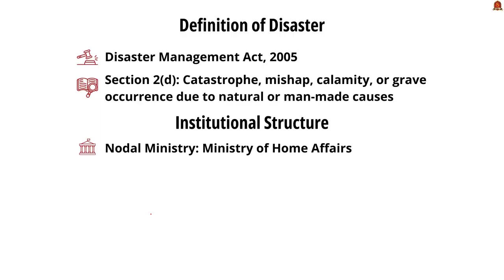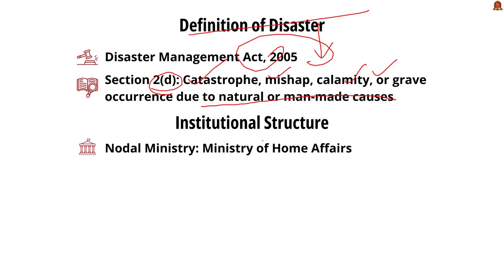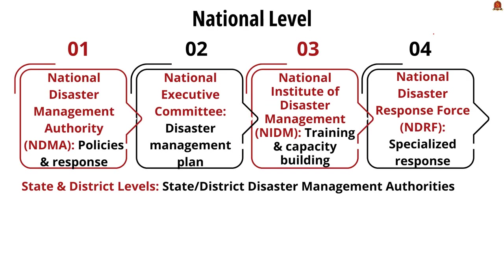The definition of disaster is defined in the Disaster Management Act 2005. According to Section 2(d) of the Act, disaster means a catastrophe, mishap, calamity, or grave occurrence in any area arising from natural or man-made causes. As per the Act, the Ministry of Home Affairs is the nodal ministry for disaster management.